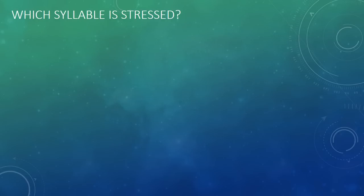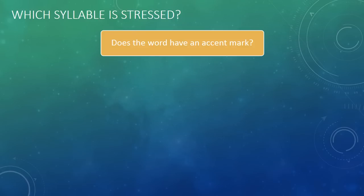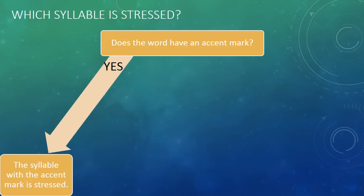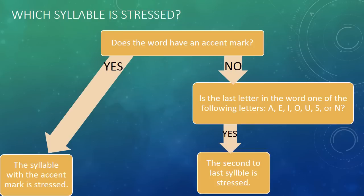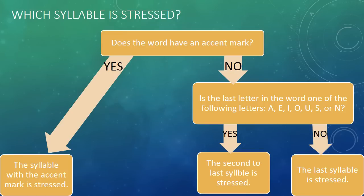Now, Spanish has very strict rules about which syllable is accented. So in Spanish, you can look at any word and instantly know which syllable is stressed. We have to ask ourselves one or two questions. First, does the word have an accent mark? If yes, then the syllable with the accent mark is stressed. But if it doesn't have an accent mark, we ask ourselves: is the last letter in the word one of the following — A, E, I, O, U, S, or N? If it ends in one of those, then the second to last syllable is stressed. The vast majority of words in Spanish do end in a vowel, S, or N. And if it doesn't end in one of those letters, then the last syllable is stressed.